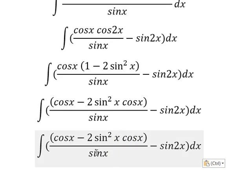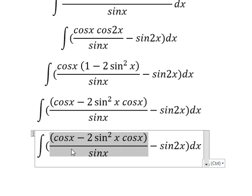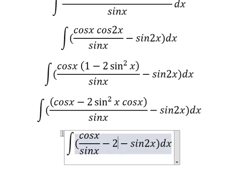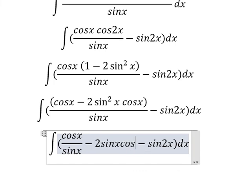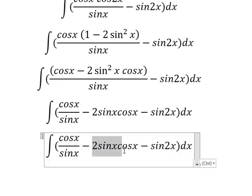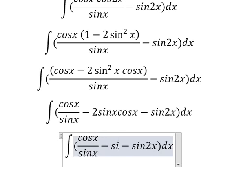Cosine x divided by sine x we keep the same. The next one, that is about two sine x cosine x. This one, that is about sine 2x.